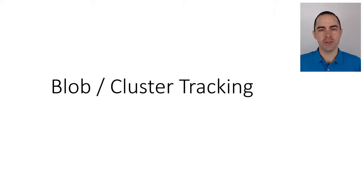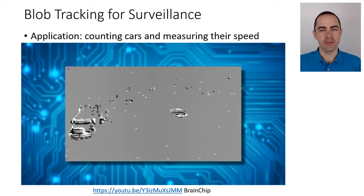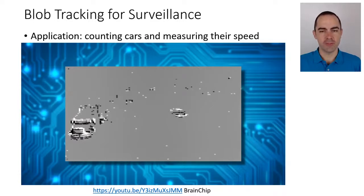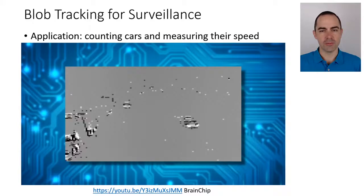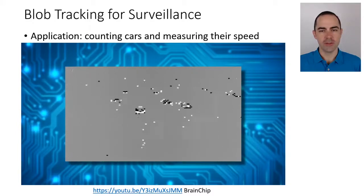Let's start with blob cluster tracking. Imagine that we have a camera that is static — for example, one that is on top of a bridge on the highway — observing cars or trucks passing by. In this scenario, all the events generated by the camera are due to moving objects in the scene. There is little change in illumination, so most events come from moving objects, such as this one. You can see the different objects.